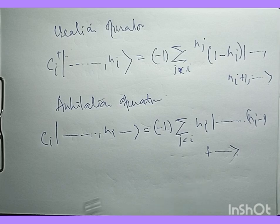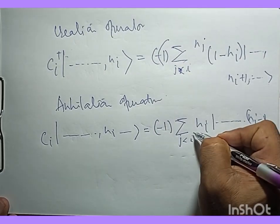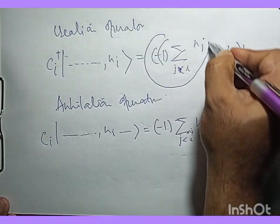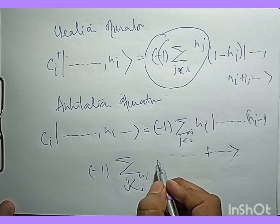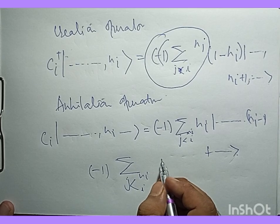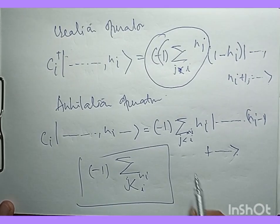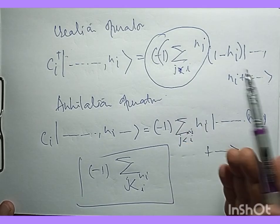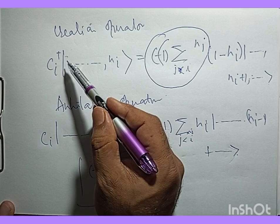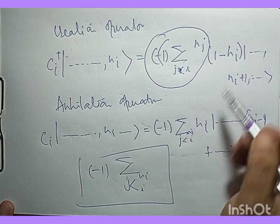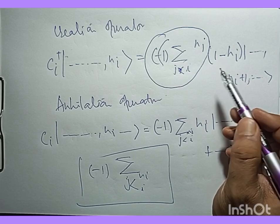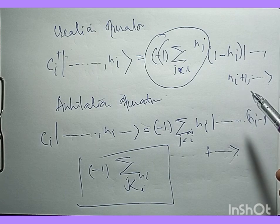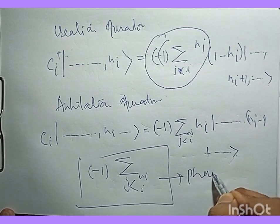The key point here is the phase factor (−1)^(Σ_{j<i} n_j). This term arises from the need to swap operators to bring c_i† or c_i to the correct position, accounting for the fermionic sign changes that come from the anti-commutation between the operators. This phase ensures correct sign treatment when adding or removing a particle.